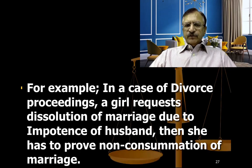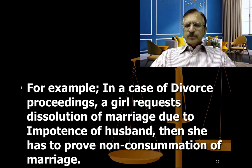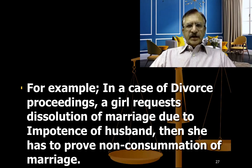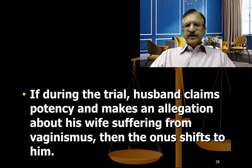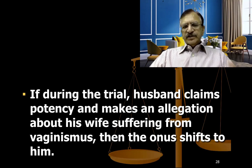Whereas in civil cases, the onus of proof during proceedings can shift from one party to the other. For example, in a divorce proceeding, if a girl requests dissolution of marriage due to impotence of the husband, she must prove non-consummation of marriage through medical examination. But if the husband claims he is potent and alleges the wife suffers from a disease like vaginismus, then the onus of proof shifts from the husband to the girl.